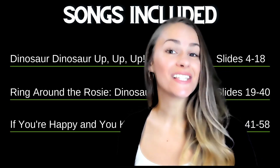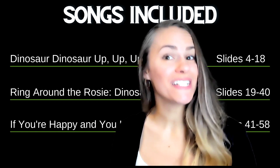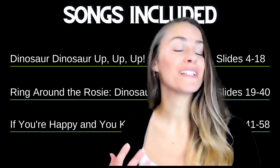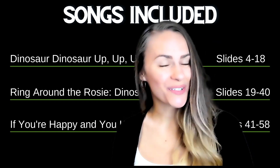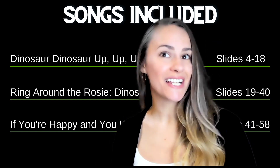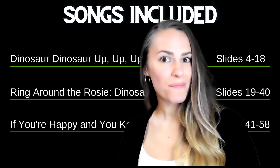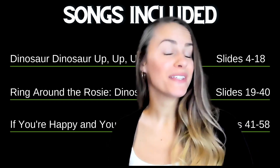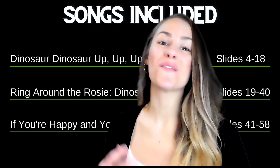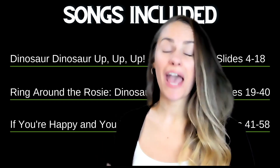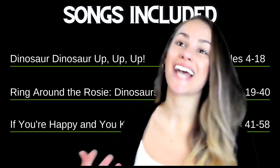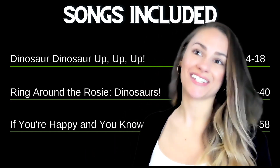This series includes three different dinosaur-themed song sequences, including a GoGo Speech original, Dinosaur Dinosaur Up Up Up, and the popular children's songs Ring Around the Rosie, and If You're Happy and You Know It — a Dinosaur Variation.